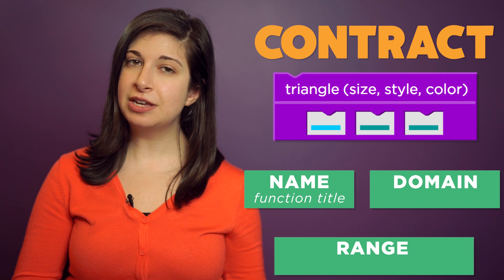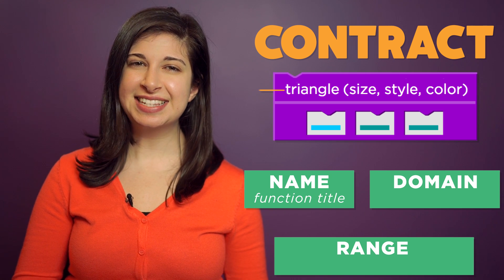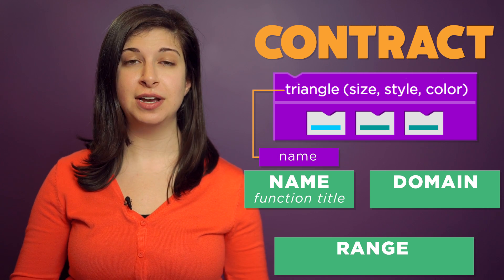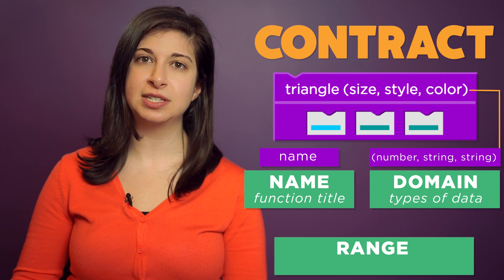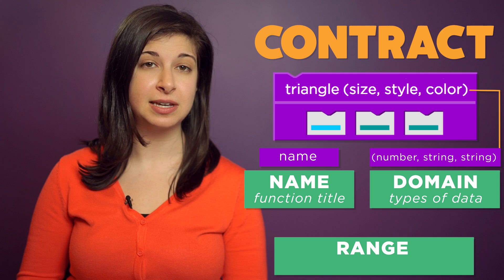The name should be pretty self-explanatory, and in this case, the name of our function is triangle. The domain of a function is a list of the types of data the function expects in the order it expects them.